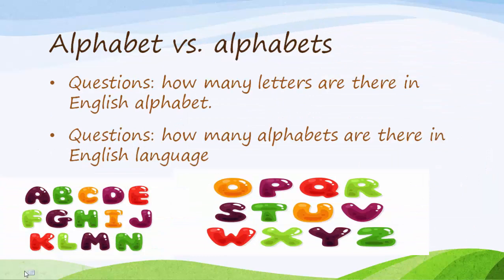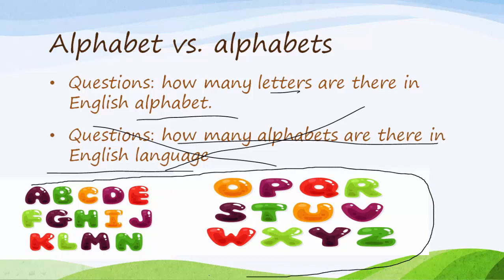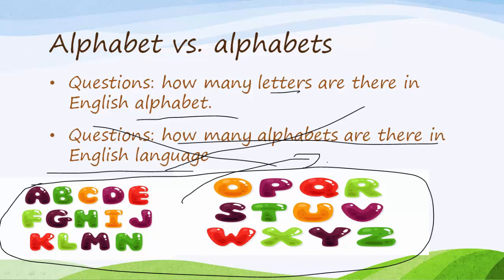Now, alphabets. In most schools, they will teach us alphabets and ask questions like, 'How many alphabets are there in the English language?' That is a wrong question. The correct question is: 'How many letters are there in the English alphabet?' All of this complete group of letters is called the alphabet — not alphabets.